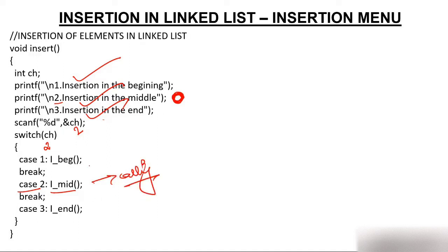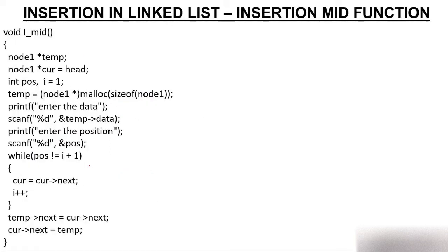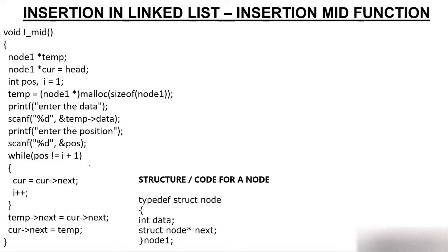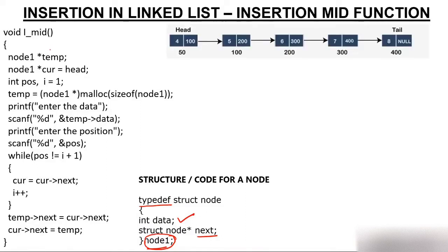So the job is done by the insert_mid function. We already have a created linked list and we need to insert somewhere in the middle — second, third, or any position. The coding shown is only for insertion in the middle. We also have a structure defined, which is used everywhere. This structure has one data part and one address part, and node1 is the typedef variable of this structure.